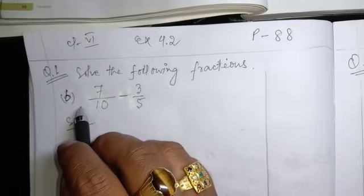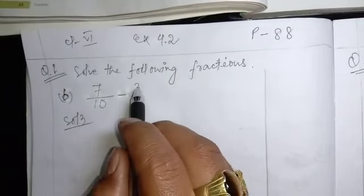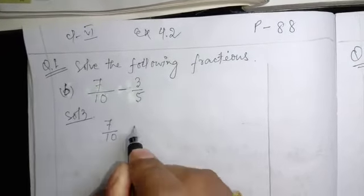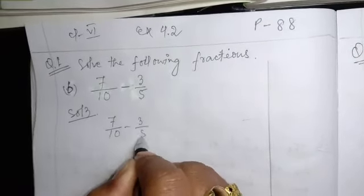I'm going to solve B, 7 by 10 minus 3 by 5. Write down the question again, 7 by 10 minus 3 by 5.